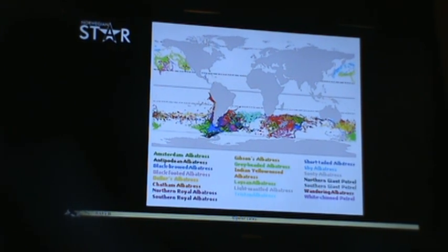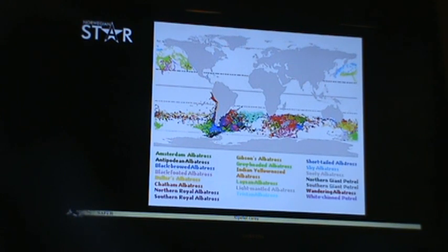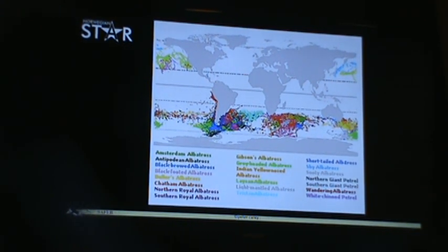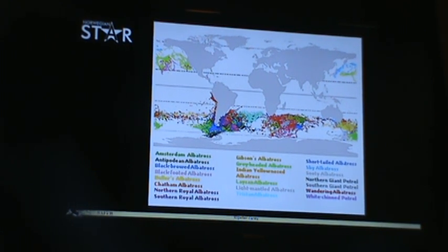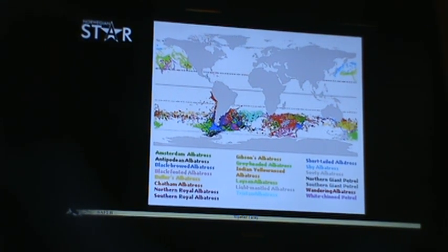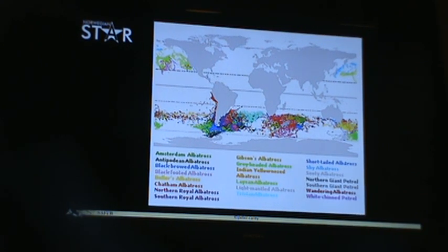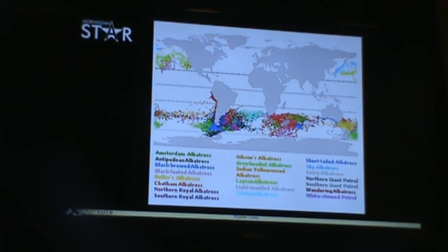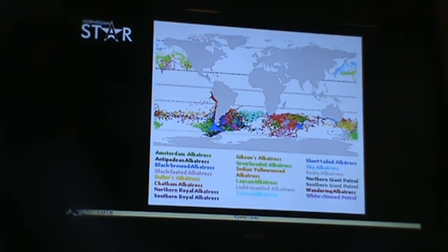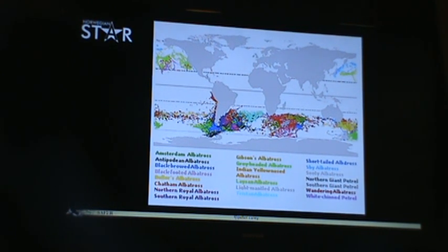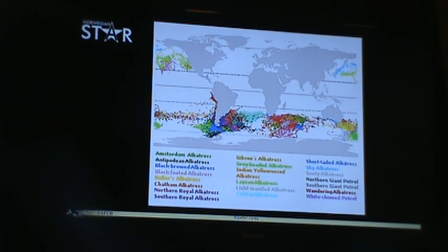The different colors here show you the distribution of the world's albatross species, a different color for each species. The main thing to take away is there's a little bit of color in the north Pacific but nothing in the tropics. These great gliding birds make their living in the cooler waters, predominantly in the southern hemisphere. We've already seen at least one albatross today — black-browed albatrosses are out there now and we'll be seeing them in greater numbers in the coming days.